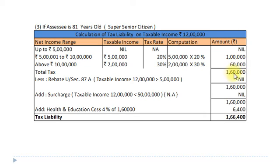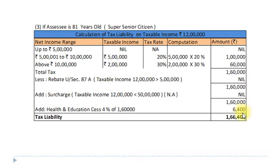Rs. 2 lakh × 30% = Rs. 60,000. Total tax amounts to Rs. 1,60,000. Rebate under Section 87A is not allowed as taxable income is more than Rs. 5 lakh. Surcharge is also not applicable as taxable income is less than Rs. 50 lakh. Health and Education Cess: 4% of Rs. 1,60,000 = Rs. 6,400. Tax liability: Rs. 1,66,400 for an assessee of 81 years old (super senior citizen).